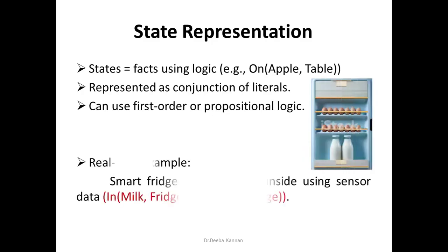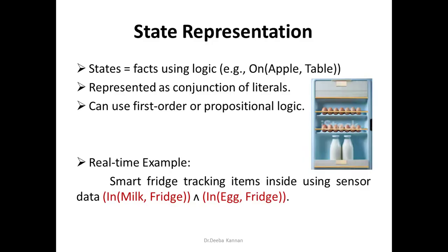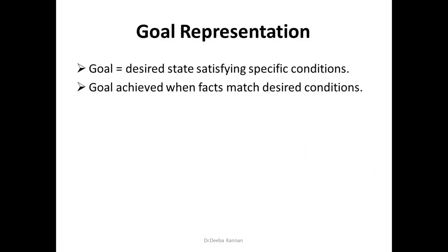For example, consider a smart fridge with a sensor that detects what items are inside. Here, milk is in the fridge and egg is in the fridge — both are present. It is a conjunction of literals, and everything is true. We can represent it as: milk-in-fridge AND egg-in-fridge. This is state representation.